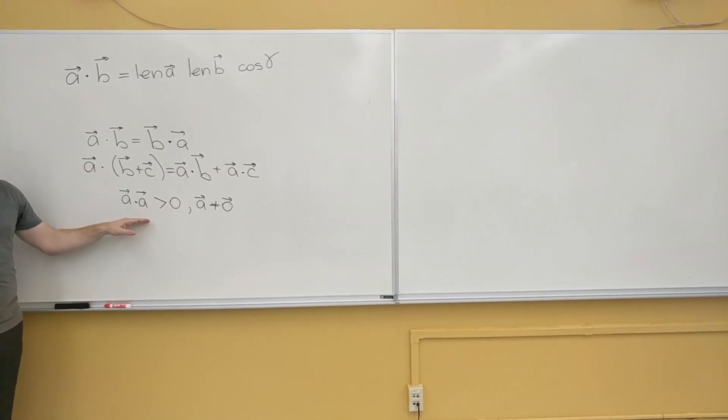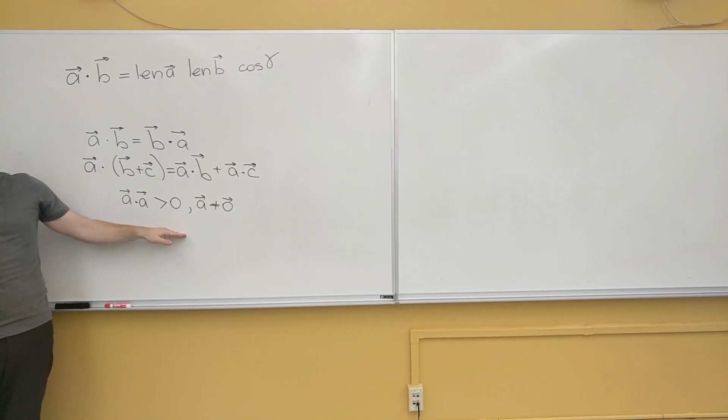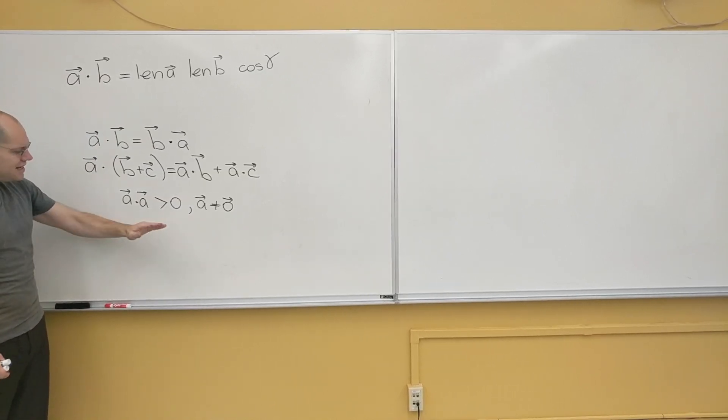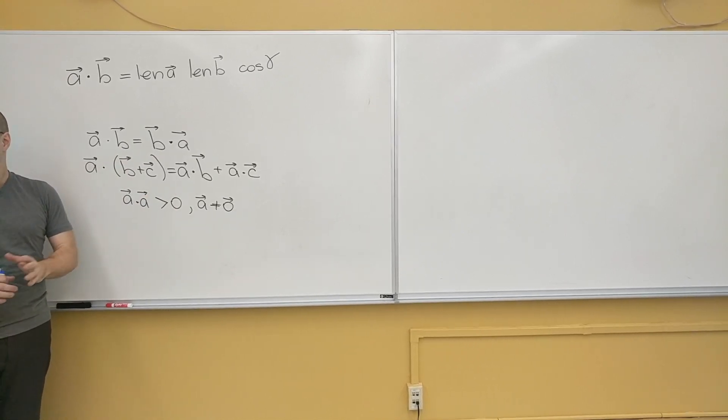And that's what I mean when I say that linear algebra turns the definition of the dot product on its head completely. Instead of giving a definition and then noticing its three key properties, it says that any operation that has these three key properties is a dot product, and let's call it an inner product, or a scalar product.